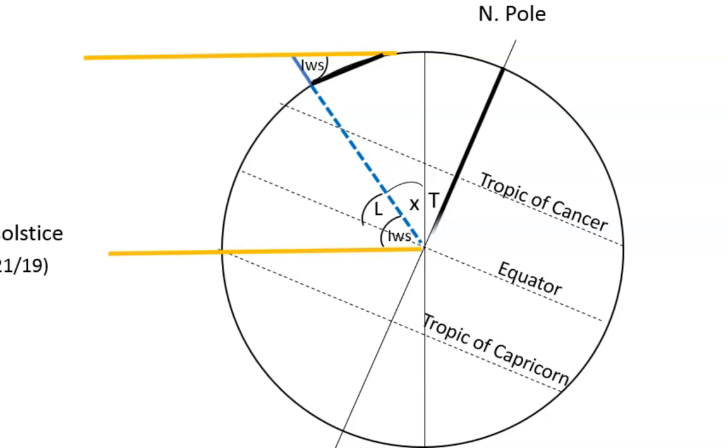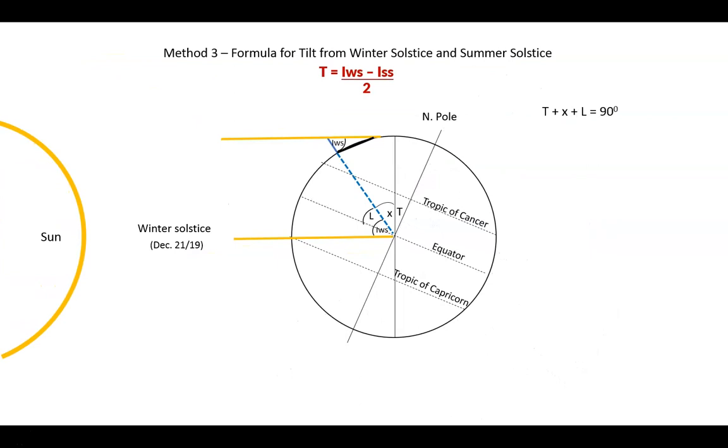Let's look at this 90-degree angle. Notice how T, X, and L form 90 degrees. So we can write T plus X plus L equals 90 degrees. The second combination is X plus IWS, and they add up to 90 degrees. Now we'll subtract the second line from the first and get T plus L minus IWS equals 0. Rearranging for T gives us T equals IWS minus L for the winter solstice. Now let's bring forward the formula for the summer solstice. Now add them together, and we get 2T equals IWS minus ISS. Divide by 2, and here is our final formula that involves measurements at the summer and winter solstices.